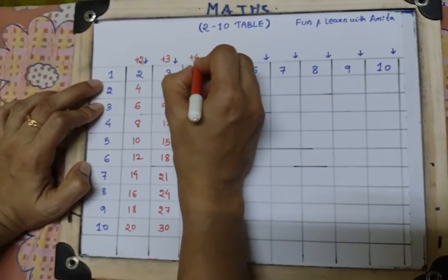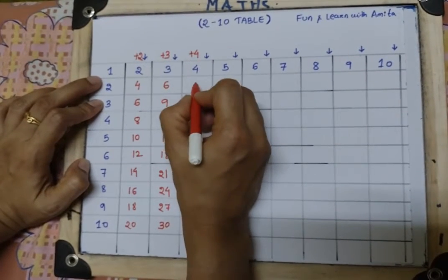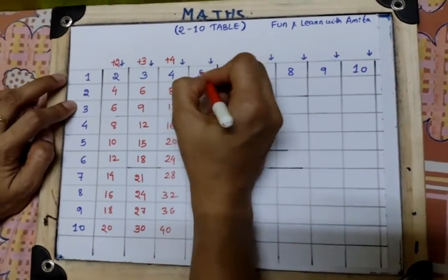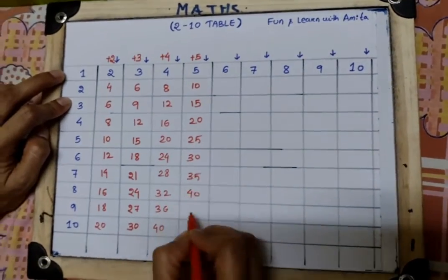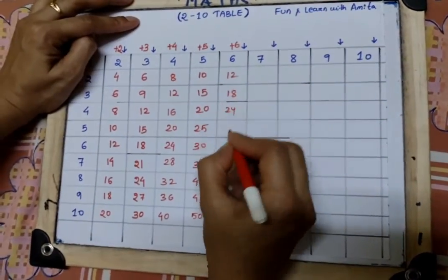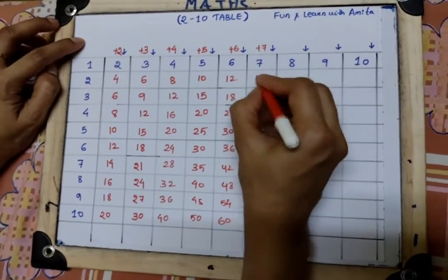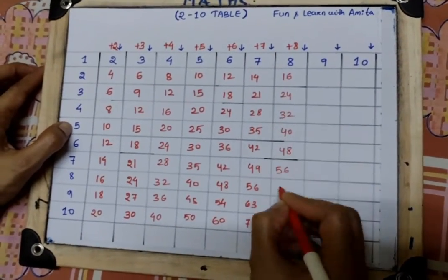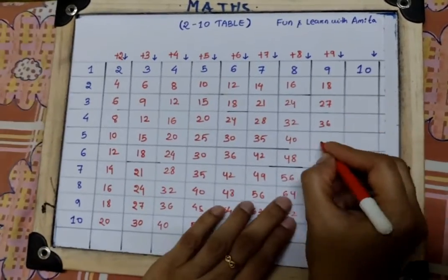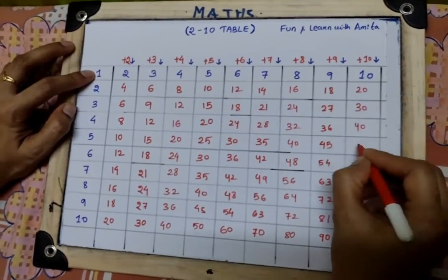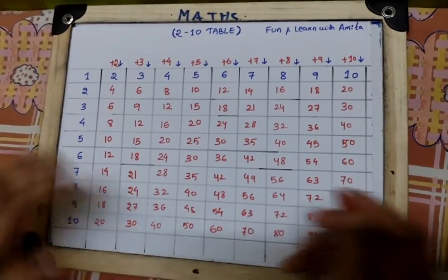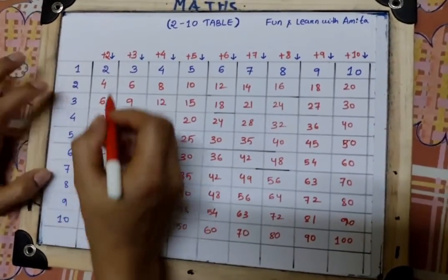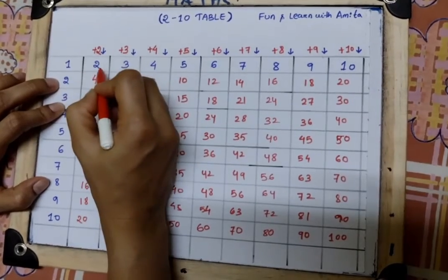So number 4 is there, then plus 4, so 4, 4 plus 4 is 8. See, we have added it now. So how to read it: 2 ones are 2, 2 twos are 4, 2 threes are 6.